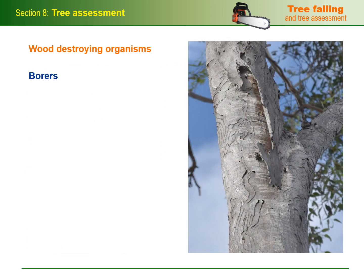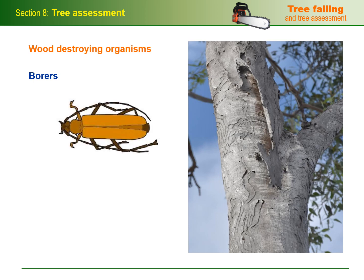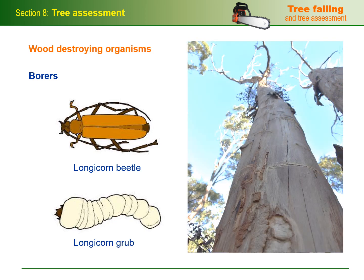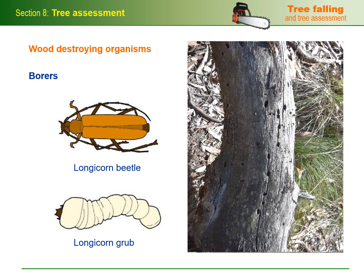There are thousands of species of borers that attack timber. Most borers are beetles that do their wood boring in the grub stage of their life cycle. These line drawings are examples of a typical longicorn beetle and grub. Borers are more likely to attack dead, dying or injured trees, since cracks and wounds provide easy access. Apart from the direct damage they do to the wood tissue, borers can also introduce infections into the tree and provide openings for fungal spores to enter.